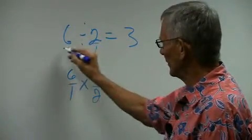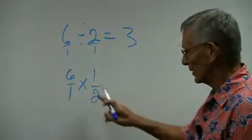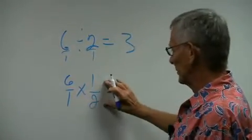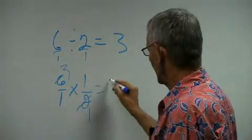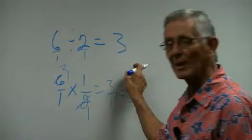Remember, these can have a 1 under them, and it makes them into fractions. So I take the first number, and I multiply it by the reciprocal of the second. I go 2 goes into 2 once. 2 goes into 6 three times. I get 3 over 1, which equals 3. I get the same answer.